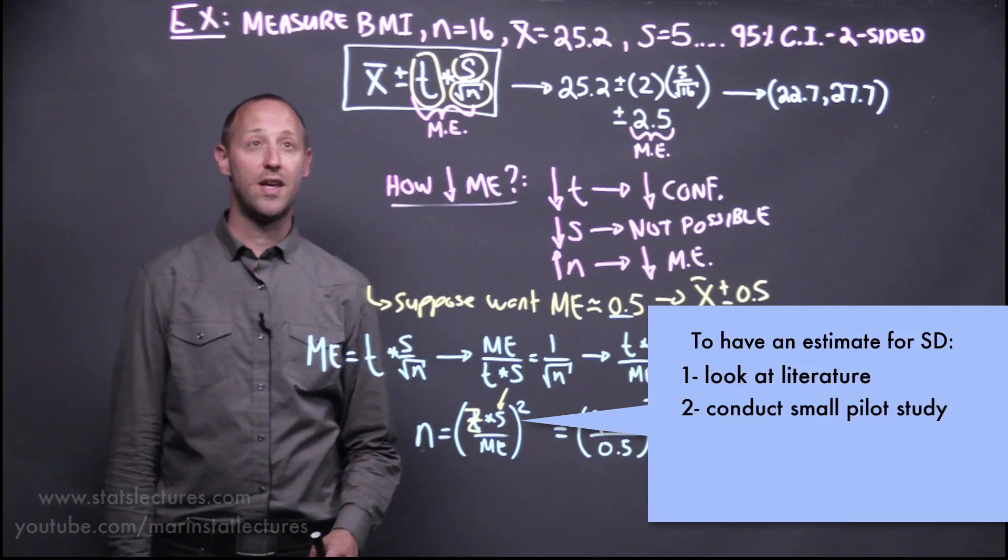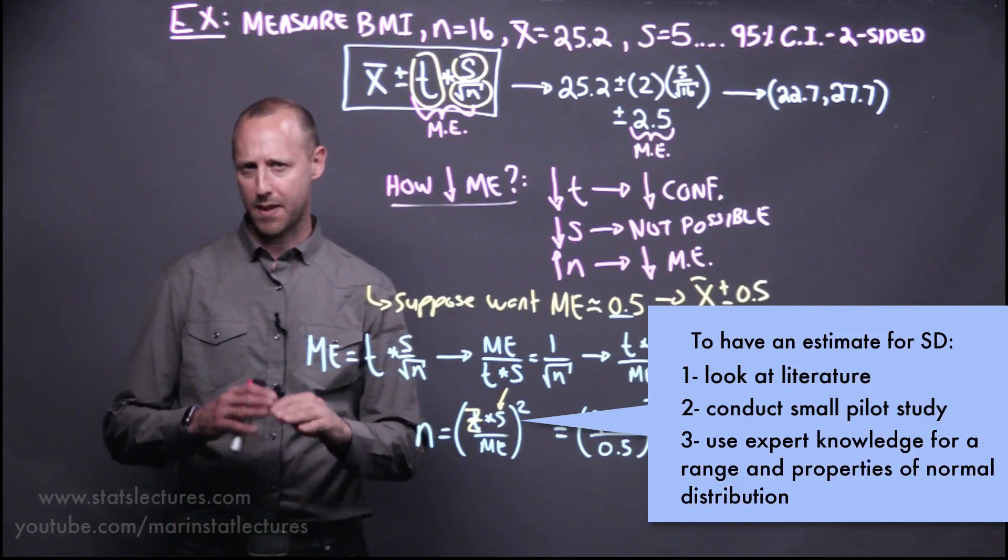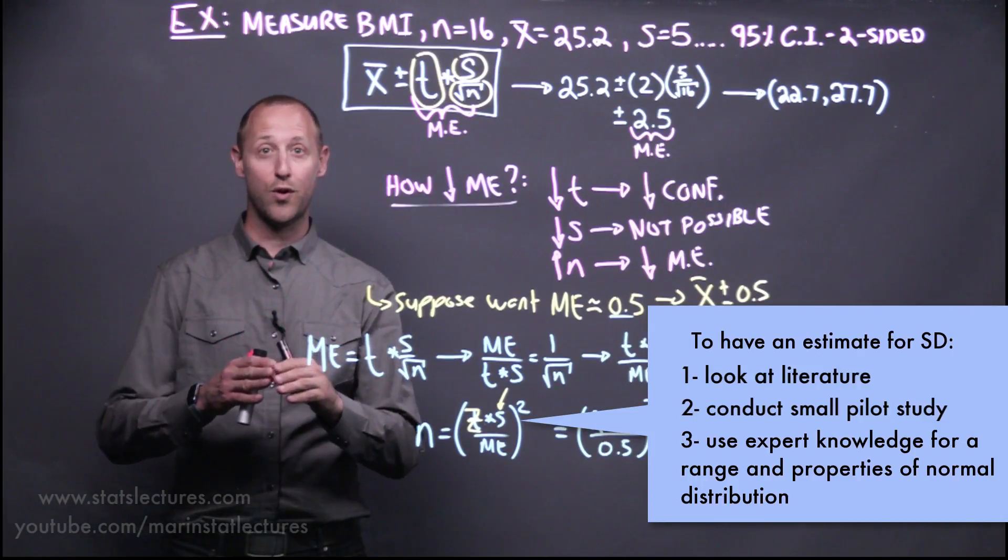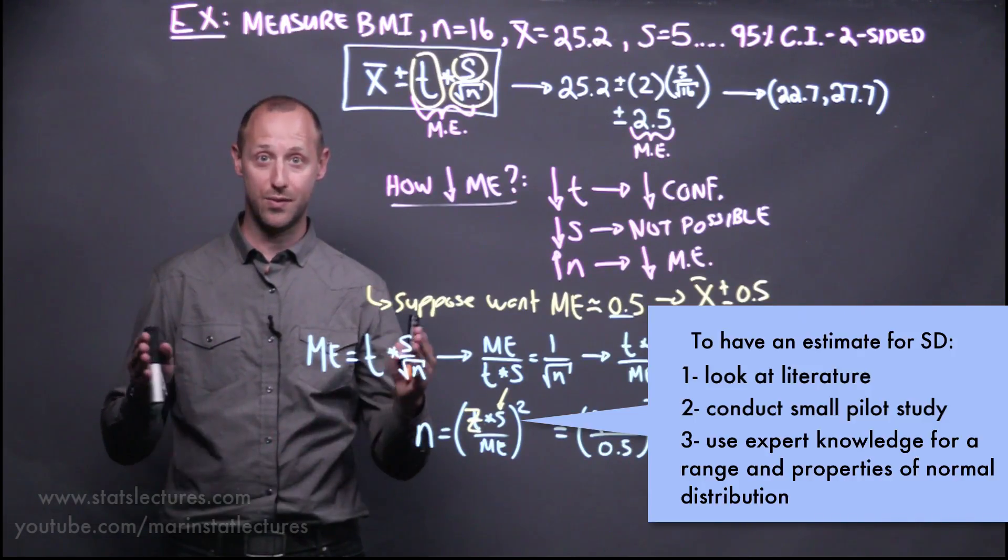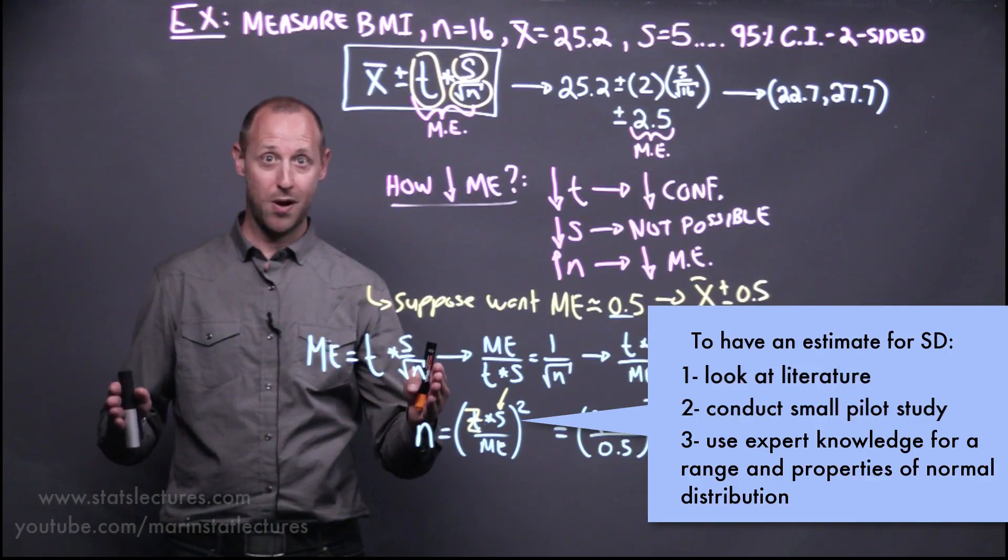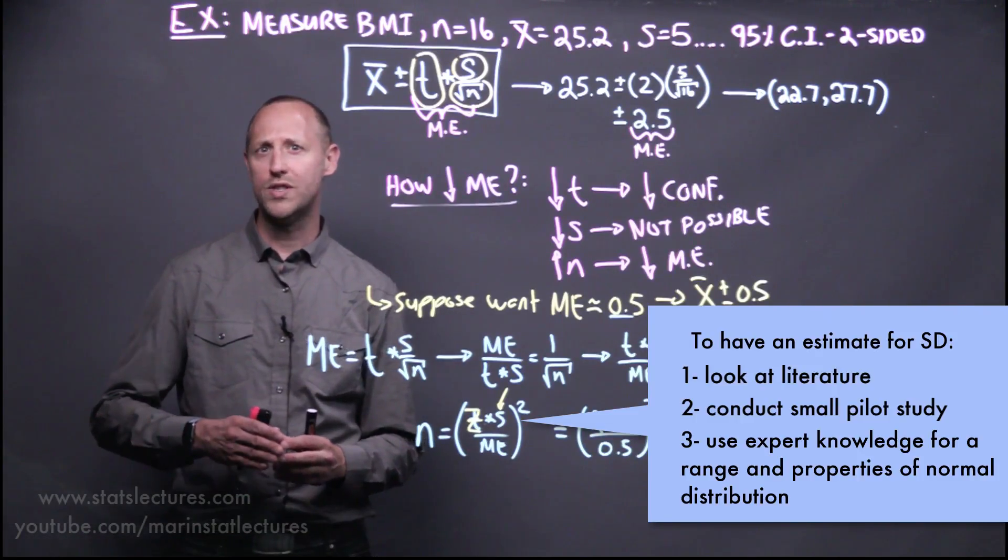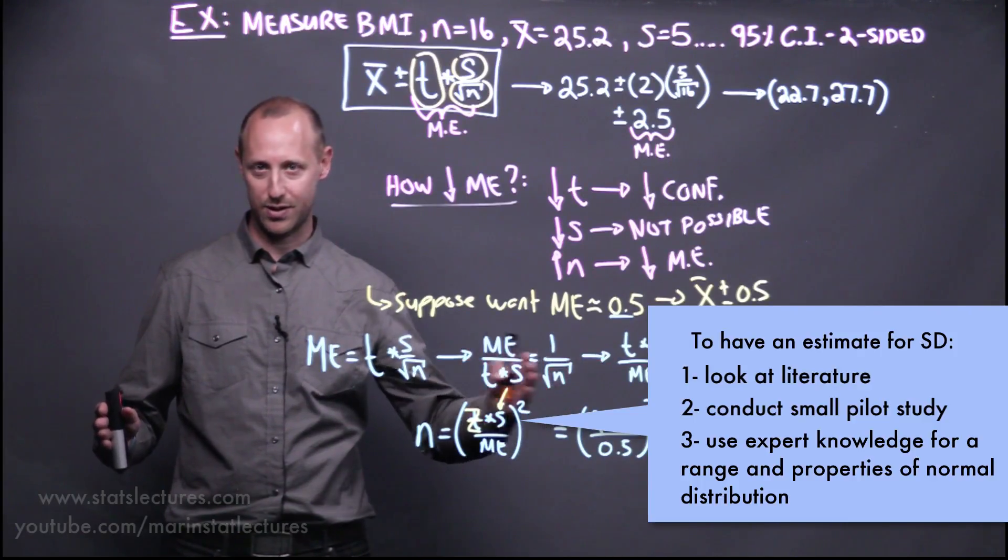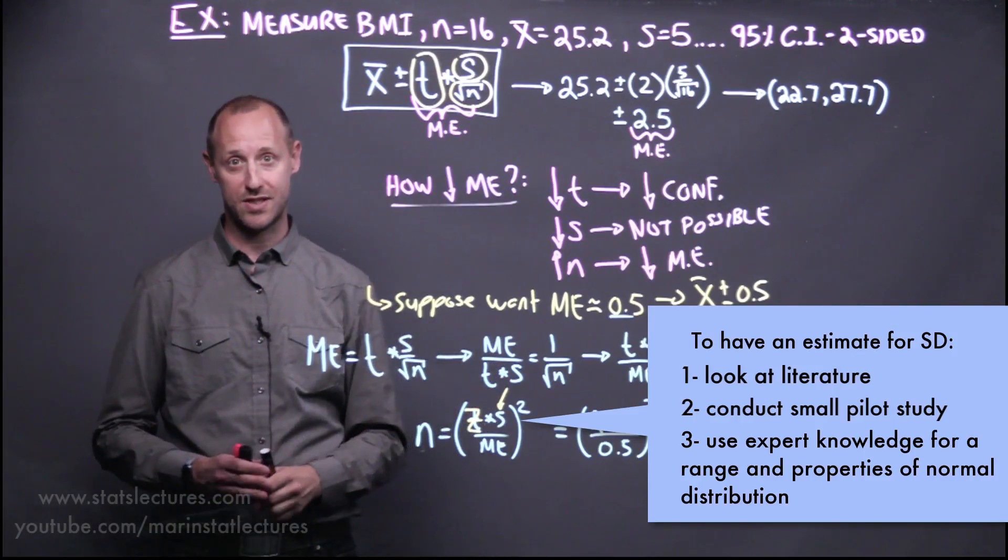Or one final option is if you know that the variable you're measuring, in this case BMI, in the population is approximately normally distributed, you can make use of the fact that we know for a normal about 99.7% of observations stay within three standard deviations of the mean. Or in other words, the range is approximately six standard deviations. So if you can have some expert knowledge to know what's the rough minimum value and the rough maximum value, excluding the extreme outliers, then you can get that range divided by six to get an estimate of the standard deviation.